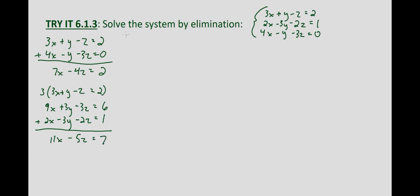Now we have two equations and two unknowns with the y variable eliminated. Let's write those down: 7x - 4z = 2, and 11x - 5z = 7.